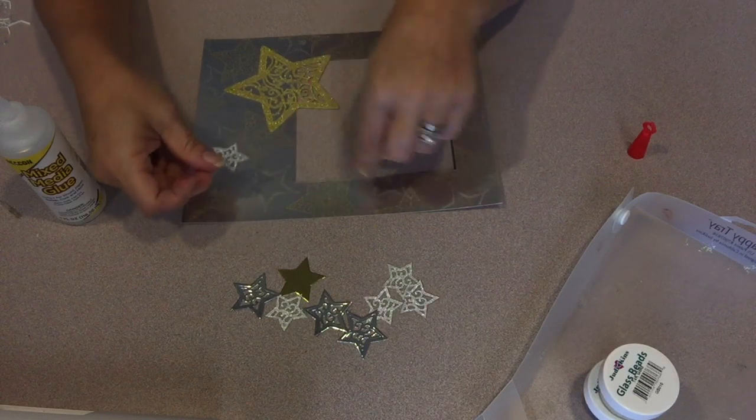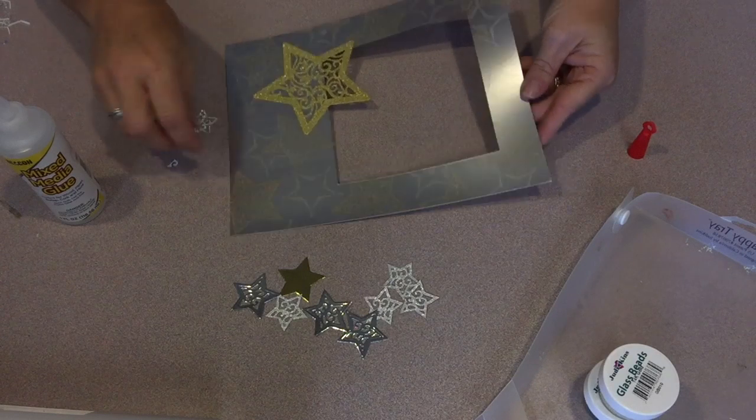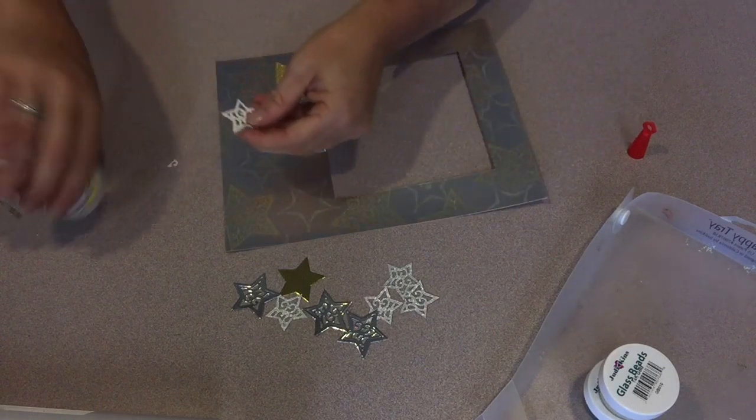After the main star was in place, I mounted some of the small silver glitter stars to the center of some of those ribbon stars that were stamped on the mat.